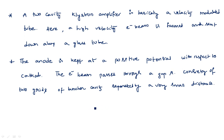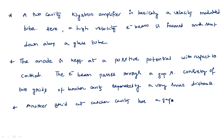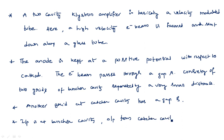The input and output are measured from the cavity resonators only. Input is applied at the buncher cavity and output is taken at the catcher cavity. The catcher cavity has a gap B. Input is at the buncher cavity and output is from the catcher cavity. Now let us see the construction of the klystron amplifier and the principle of operation behind it.